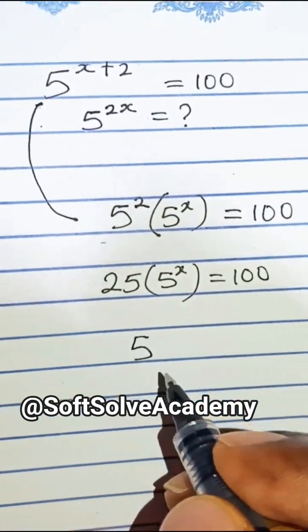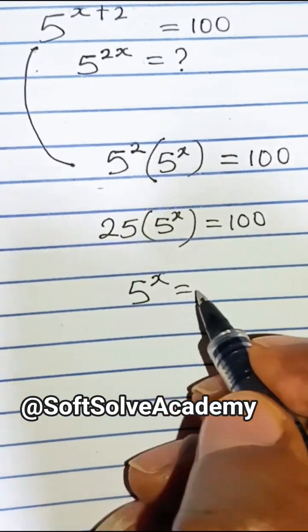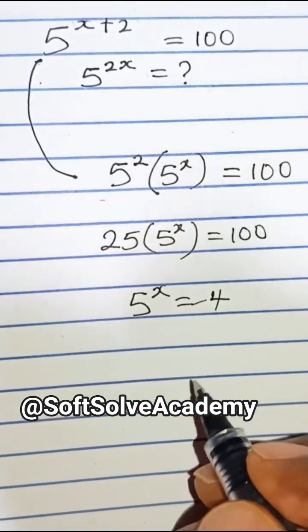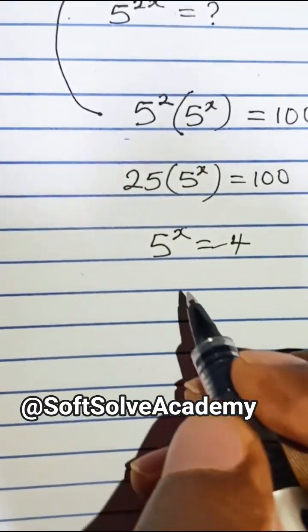So 5 to the power of x equals 100 divided by 25, which is 4.